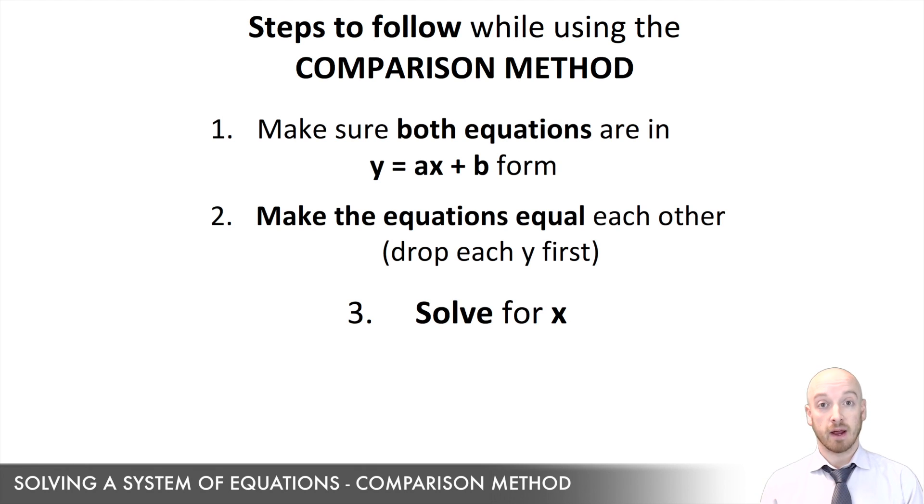The third step is to just solve for x. So gather your terms with x in it on one side of equals, and your other numbers on the other side of equals, and isolate that x variable. The fourth step is to take that value you just found for x and plug it into both of those original equations. And when you get the same answer for y from both equations, you know you've done your work properly. So the x and the y values that you just found together form the solution to a system of equations.